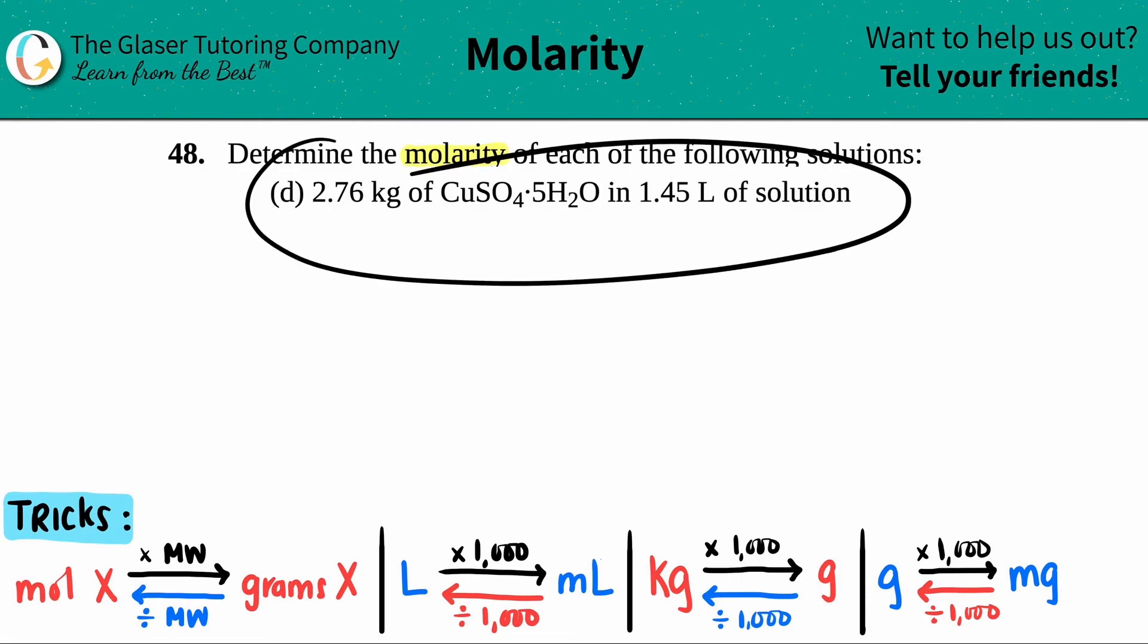So in this case, they told us that we have 2.76 kilograms of copper 2 sulfate, CuSO4, and then pentahydrate. And this is all in 1.45 liters of solution. We want to find out the molarity. They gave us a unit of quantity and a volume. So what's the formula for molarity?